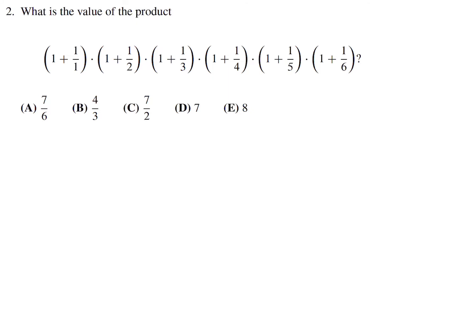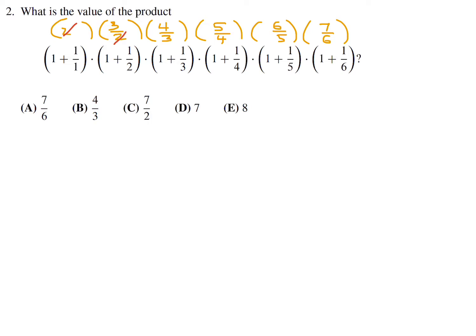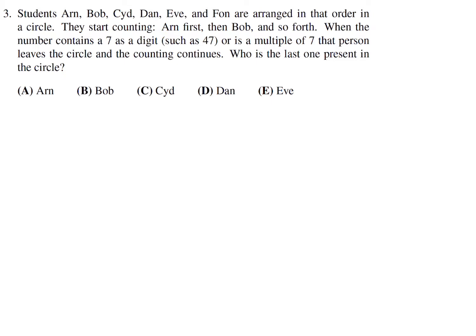What is the value of this product? Well, this is 2, this is 3 over 2, this is 4 over 3, 5 over 4, 6 over 5, and 7 over 6. These are all products — you're multiplying. You'll notice you can start crossing things out: 2 cancels, 3 cancels, 4 cancels, 5 cancels, 6 cancels. The only thing left is 7, and that's the answer. Number 2, the answer is D.